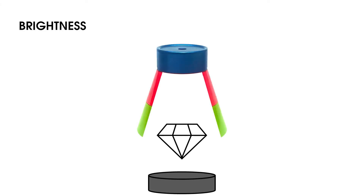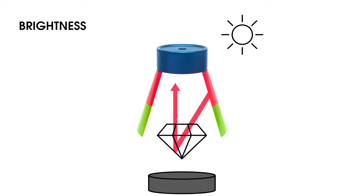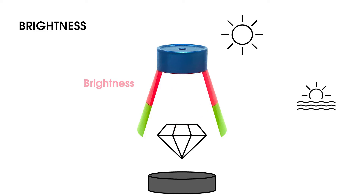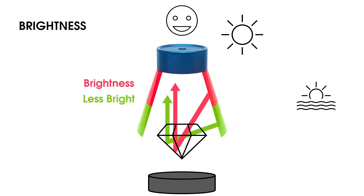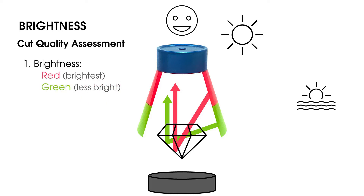When placed over a diamond, light coming from high angles turns red. Light that reflects and travels up represents brightness. Similarly, light coming from low angles turns green, showing areas that are less bright. A viewer looking through the lens will see the brightest areas as red and less bright areas as green. So in Asset cut quality assessment, bright areas are red and green.